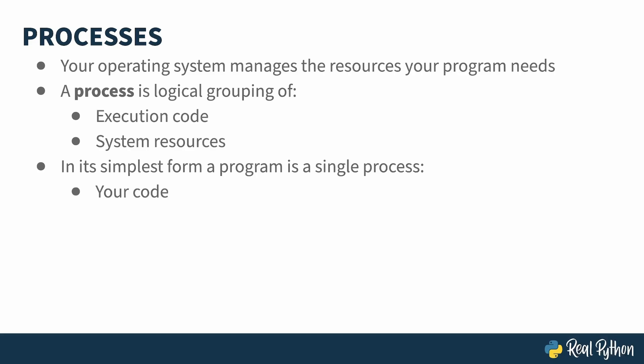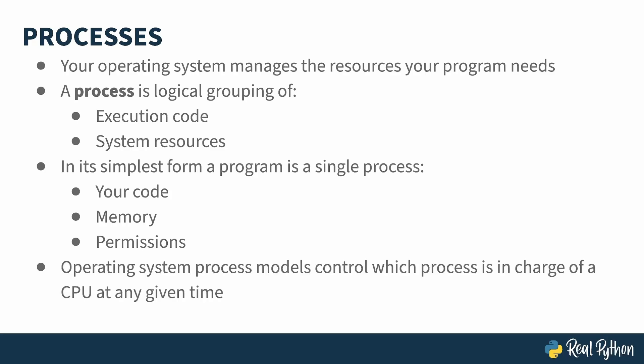Each process contains your code, some memory allocated to it — often split into two categories, the stack and the heap — where the stack is for memory used by the program to track what functions have been called, and the heap is general-purpose memory. In modern operating systems, all of this is controlled by some set of permissions, ranging from what resources a process can access to making sure that my code doesn't foul up your code when we're running on the same machine. The core part of this is that the operating system is in charge of what process has control of a CPU at any given time.